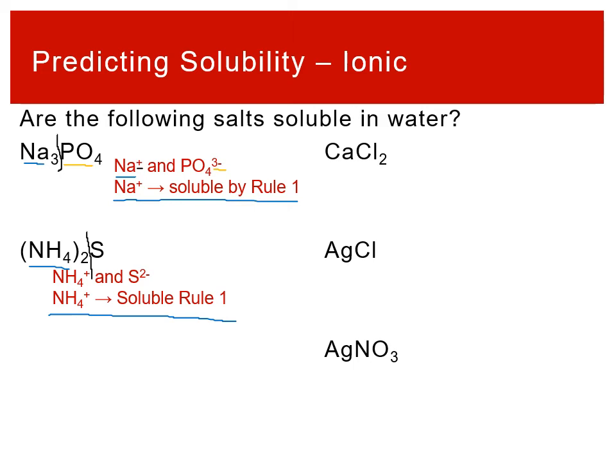For calcium chloride, we break it into ions: calcium and chloride. Calcium has no specific rule associated with it. Looking at chloride, we go down to rule four — rule one covers Group IA and ammonium, rule two covers certain polyatomic anions, rule three covers silver, lead, and mercury, and rule four is about chloride. Chlorides tend to be soluble, so calcium chloride is soluble by rule four.